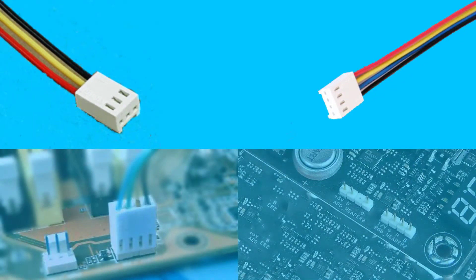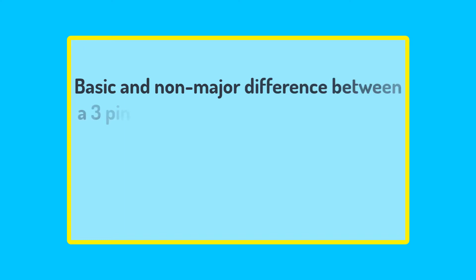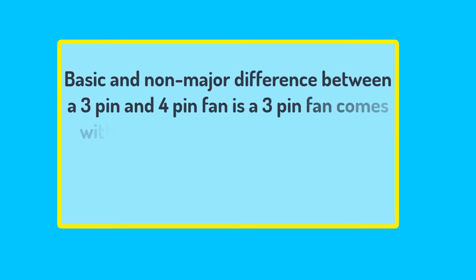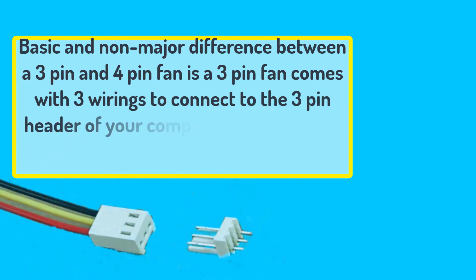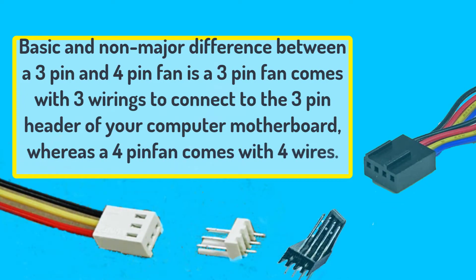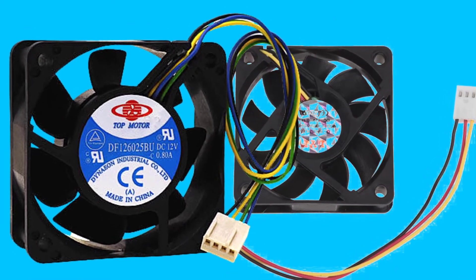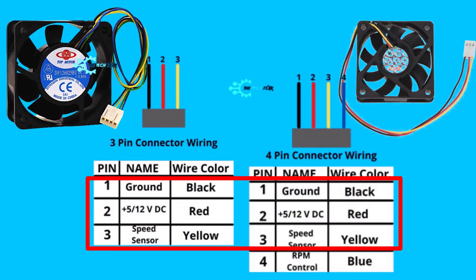When you are a newbie and confused with the 3-pin and 4-pin fans, the first thing that catches your eyes is the connector pin. The basic, non-major difference between a 3-pin and 4-pin fan is that a 3-pin fan comes with 3 wirings to connect to the 3-pin header of your computer motherboard, whereas a 4-pin fan comes with 4 wires. In both fans, 3 wires feature quite the same ground, live, and speed sensor connection signal pin.